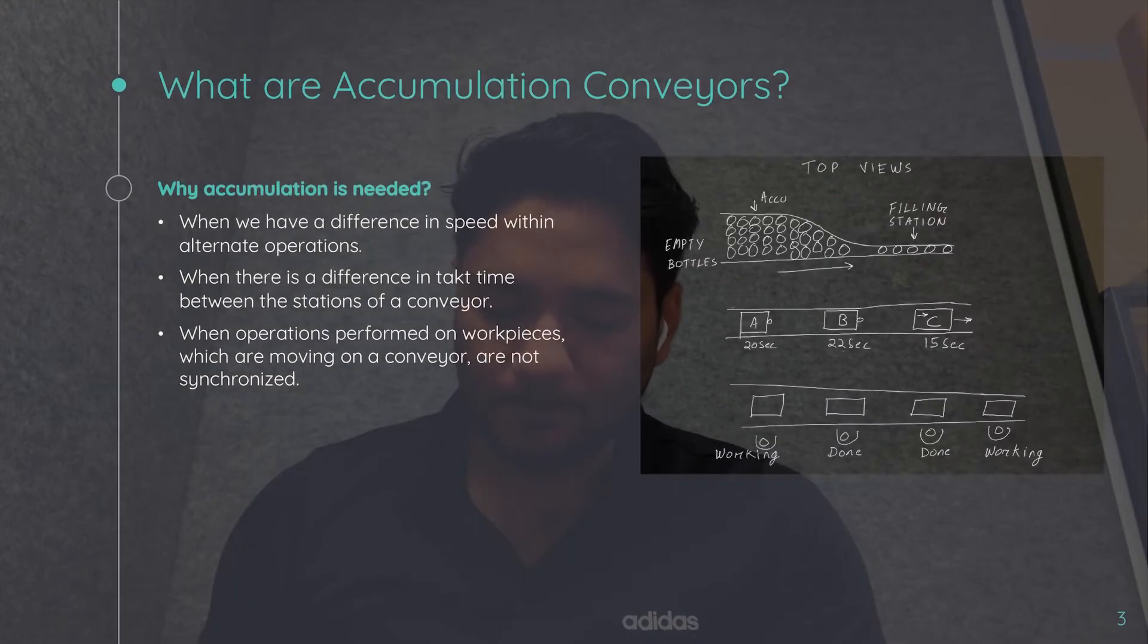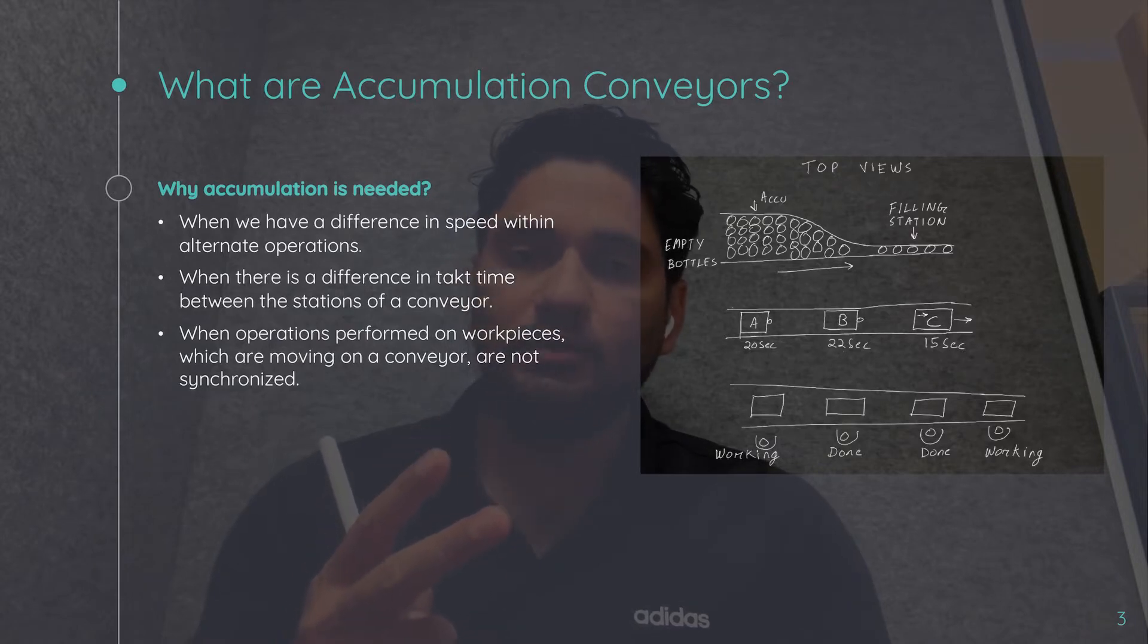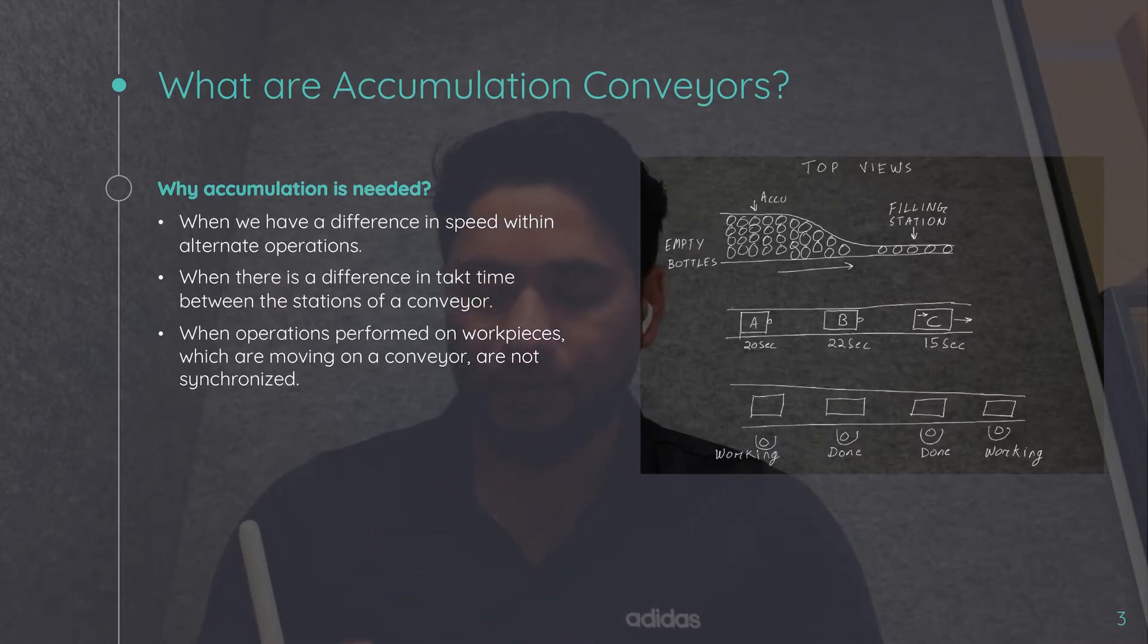In which case is accumulation conveyor required? There are three particular cases in which accumulation is required: when the feed rate is higher or lower than exit rate; second is when there is a difference between operation time done on a workpiece at different stations; third is when there are multiple operators working on a single conveyor on a workpiece.